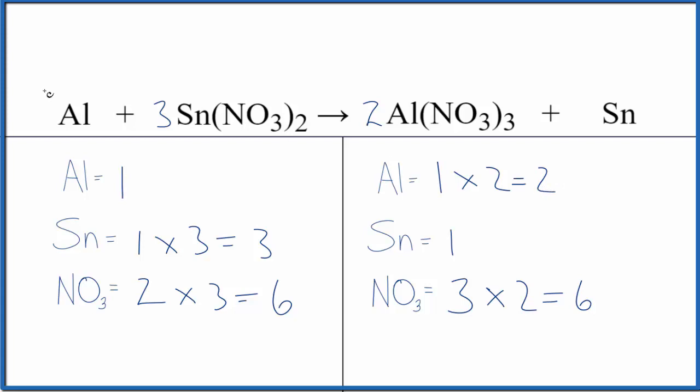We have one aluminum and then two here. Let's put a two here. That's good. Tin, three here, one in the products. Let's just put a three here. We're done. This equation is balanced.